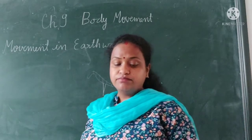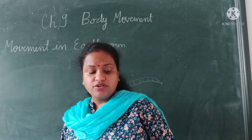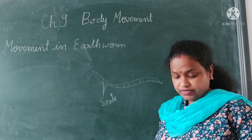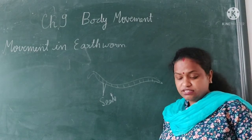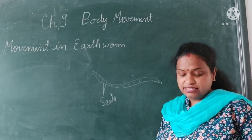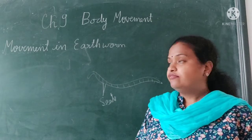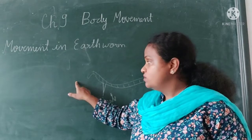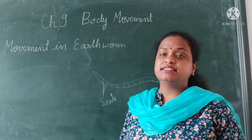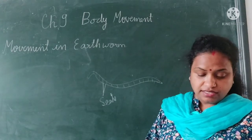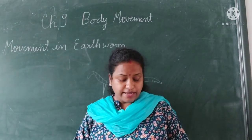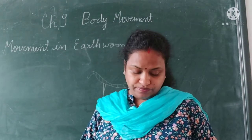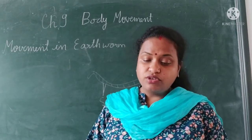It has the contraction and expansion of the muscles, due to which it moves from one place to another. Then it attaches its free end to the surface and contracts its muscles to bring the other end forward. This contraction and expansion of the muscles helps the earthworm to move.